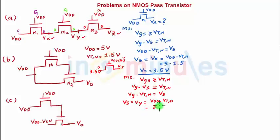So this is again 5 minus 1.5, 3.5 volts, which is Vy.